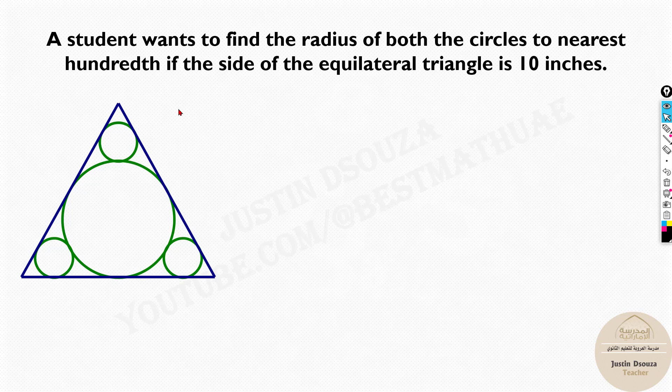We have to find the radius of both circles to the nearest hundredth. Now first let's see what we know. We know each side is 10 inches. What else? Nothing. No other information is given.